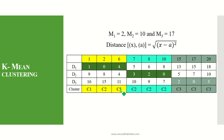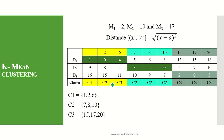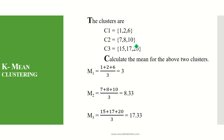The cluster assignments are C1, C1, C1, C2, C2, C2, C3, C3, C3. So C1 has 1, 2, and 6; C2 has 7, 8, and 10; C3 has 15, 17, and 20. We recalculate the means: (1+2+6)/3 = 3 for M1, (7+8+10)/3 = 8.33 for M2, and (15+17+20)/3 = 17.33 for M3.